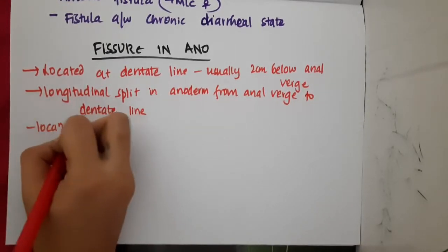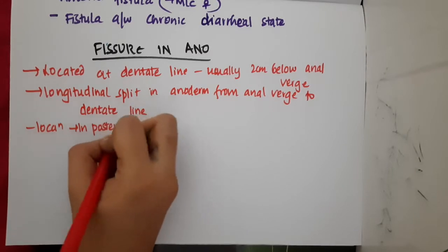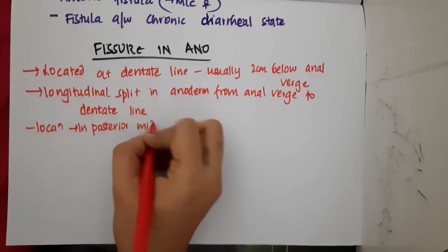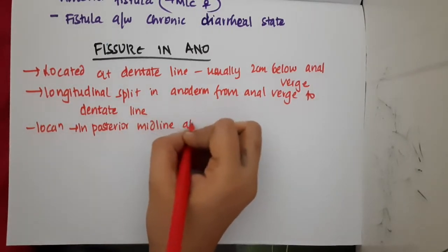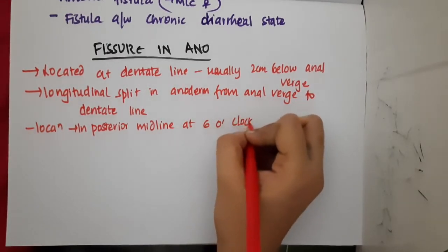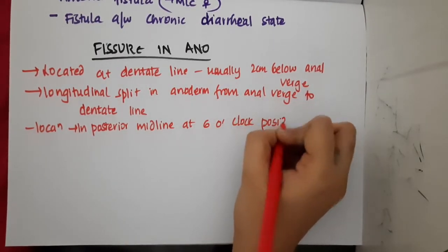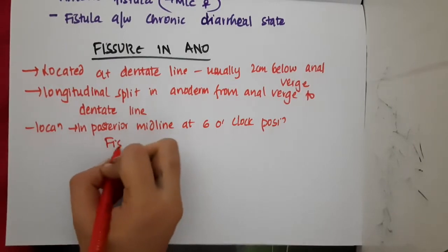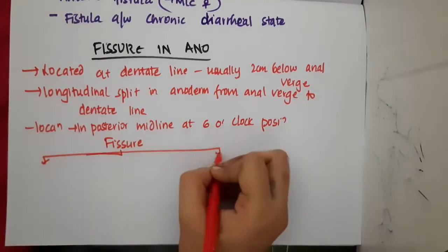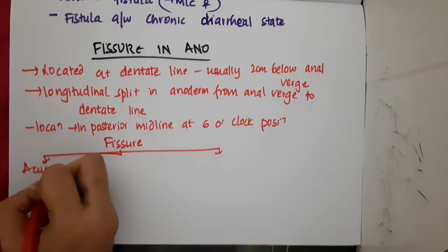Regarding location, the fissure is present in the posterior midline at the six o'clock position. These fissures are of two types: we have acute fissures and we also have chronic fissures.